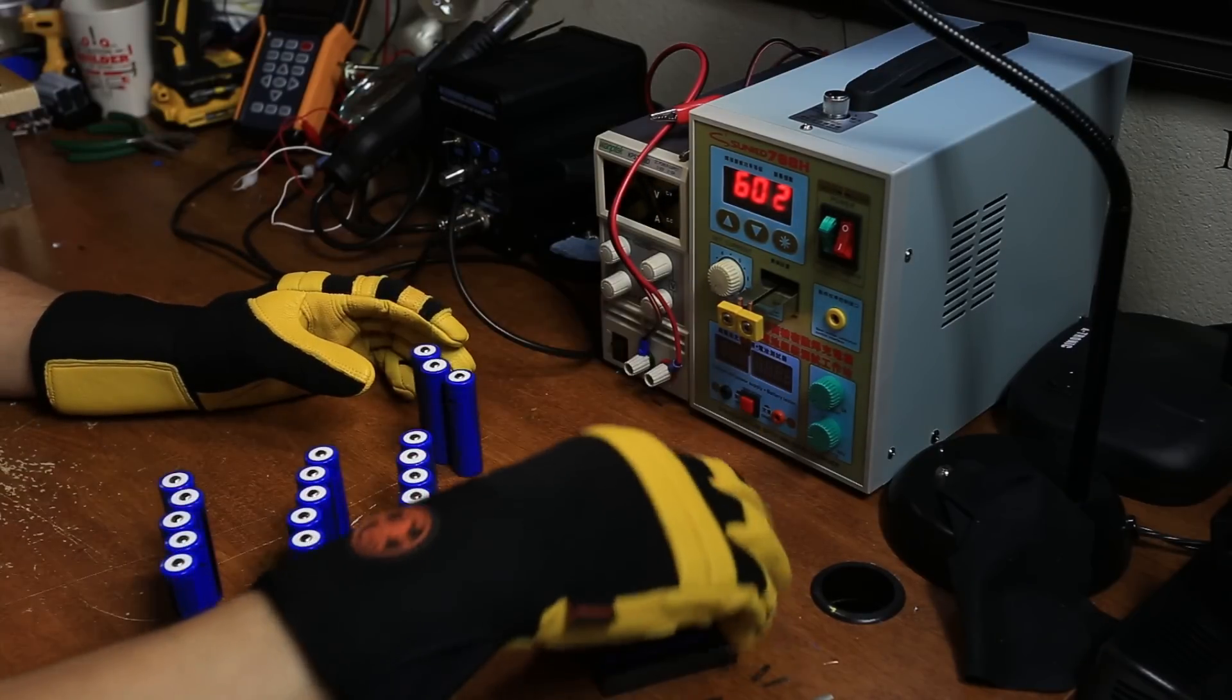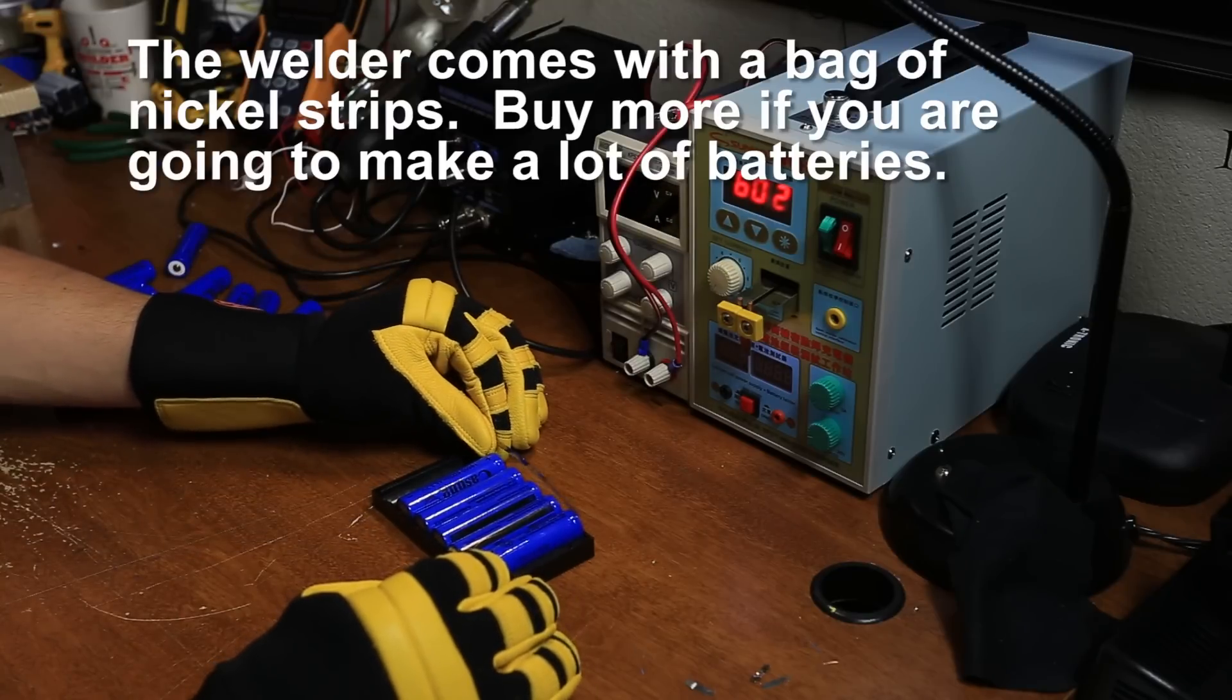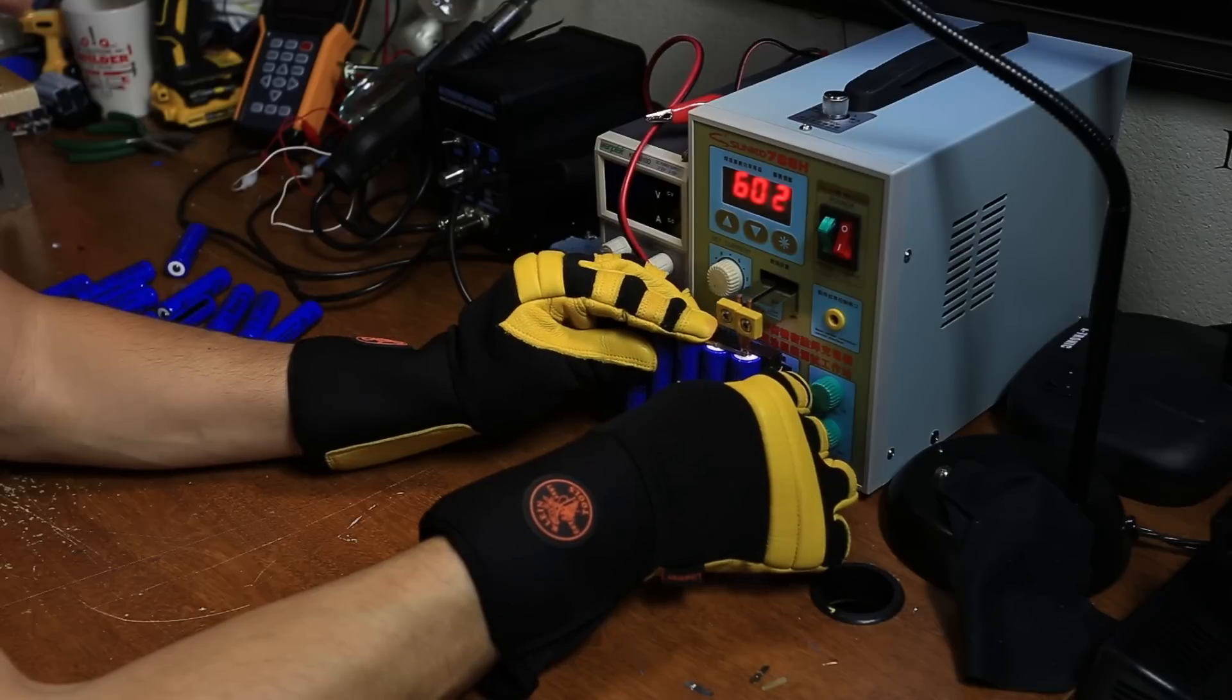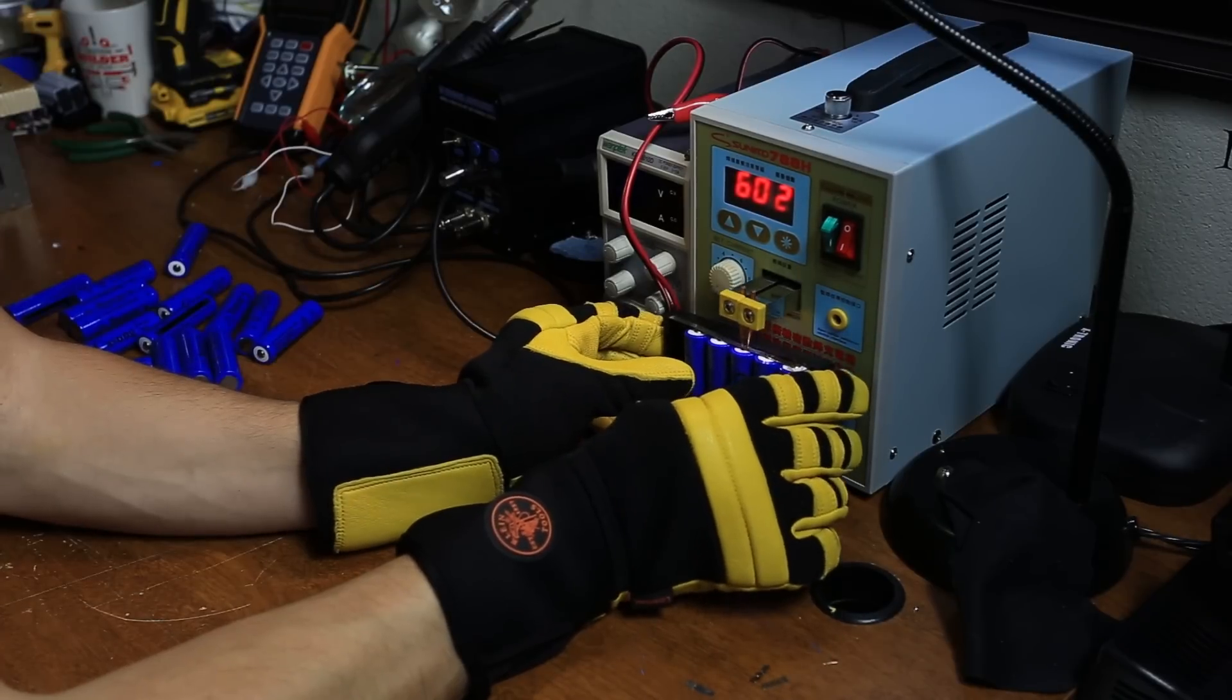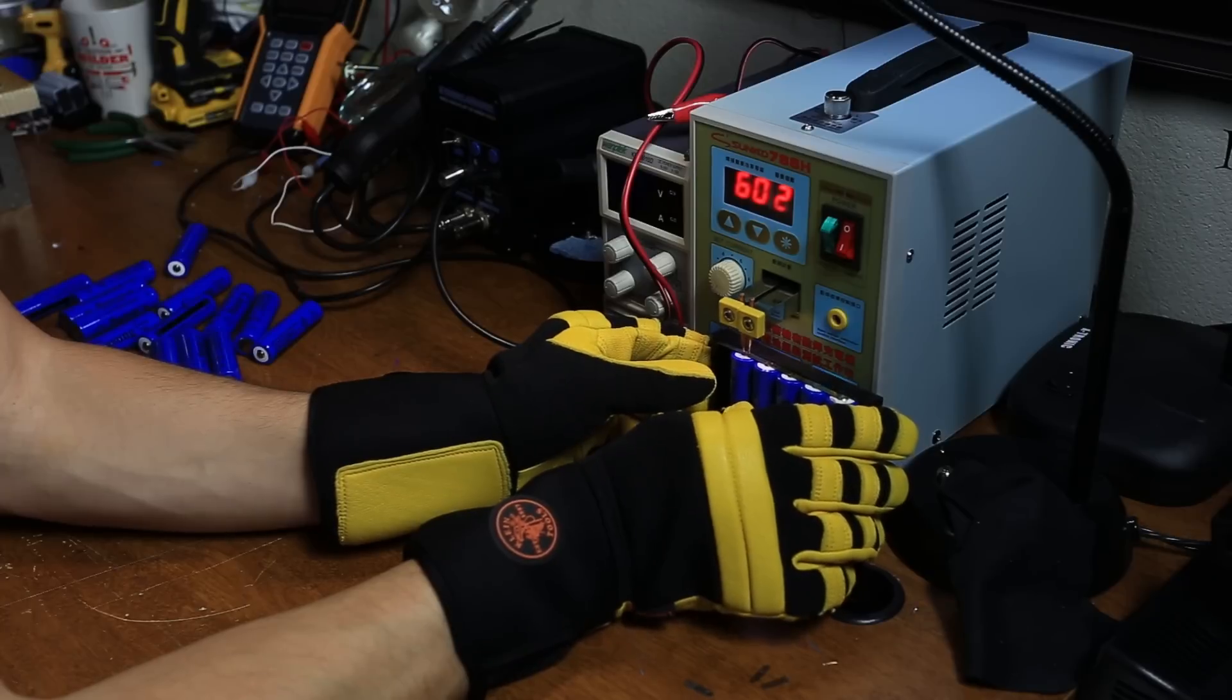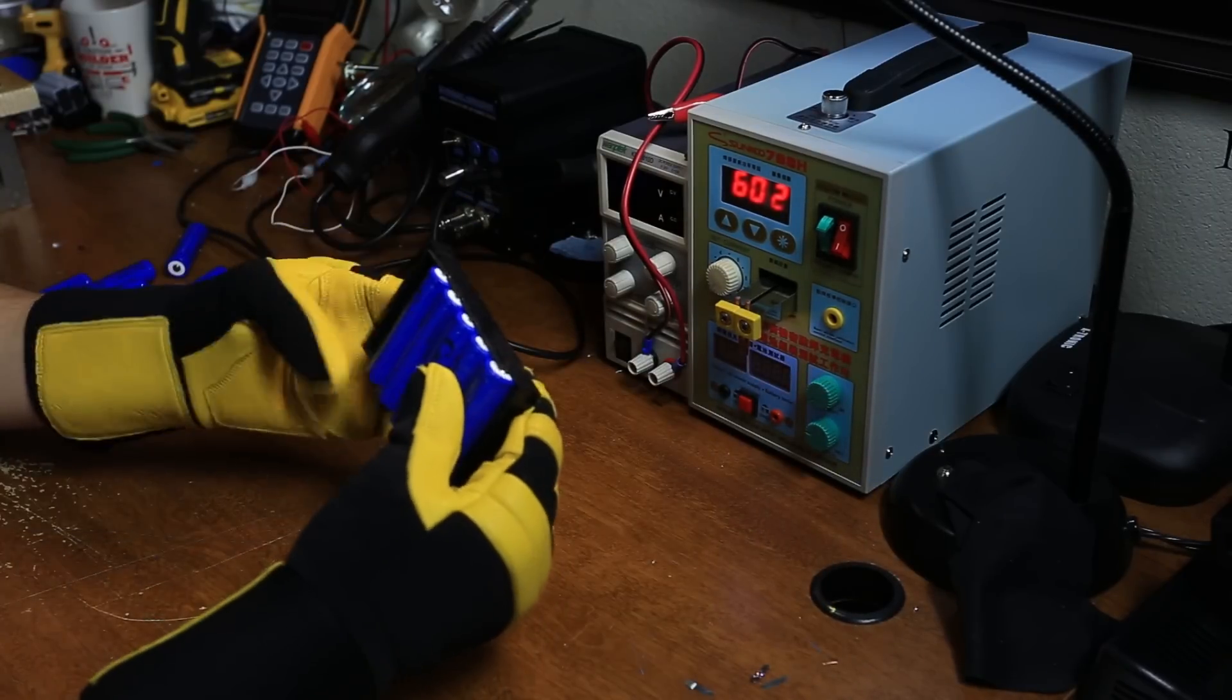It comes with this little tray for helping you line up these batteries that you're going to be welding. First thing we're going to do is get a strip of nickel and it looks like one strip is just long enough to go across all the terminals. There we go, and let's do the other side.